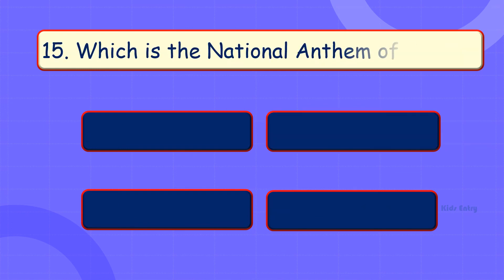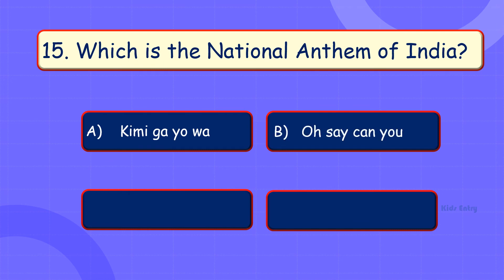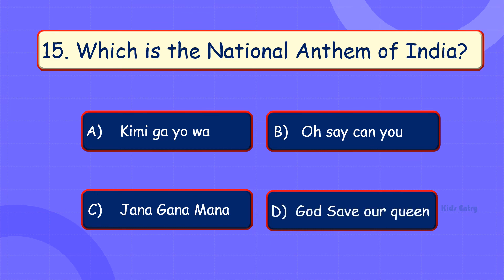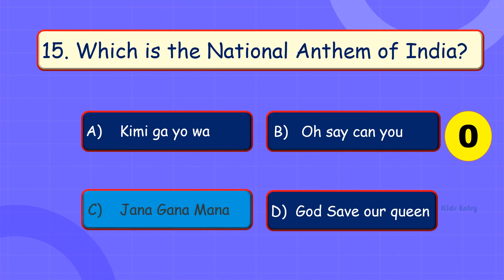Which is the national song of India? A. Kimi Gaia wa. B. O Sekanyu. C. Janaganamana. D. God Save Our Queen. Answer is Option C: Janaganamana.